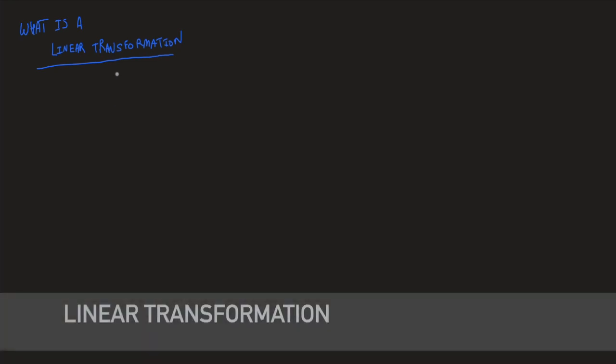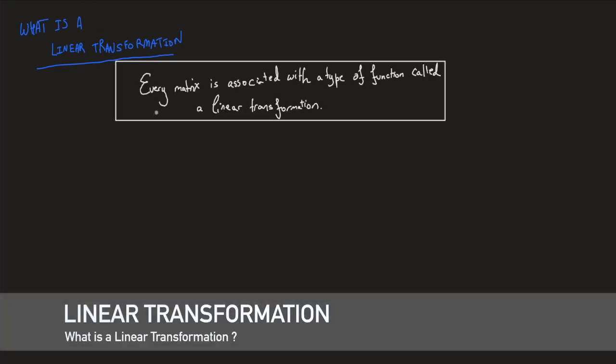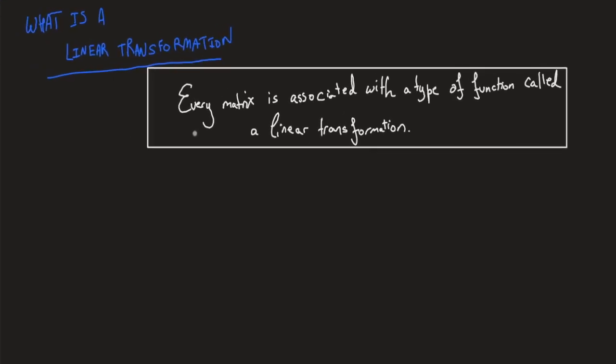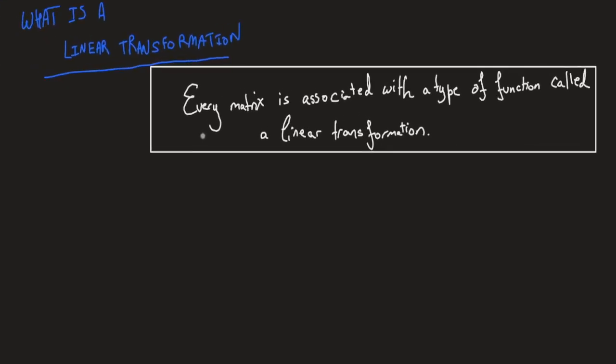So what is a linear transformation? Every matrix is associated with a type of function called a linear transformation. That means you can regard a matrix in another way — so instead of just looking at a matrix as a rectangular array, you can also associate it with a specific type of function that is called a linear transformation.